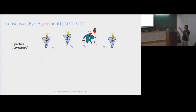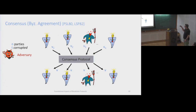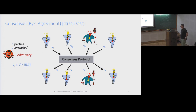What is consensus? You have a bunch of parties, some of them might be corrupted, with initial values. They are controlled by an adversary, and there's a consensus protocol whose output would be the same value to all parties. Without loss of generality, you can assume this is binary, because you can reduce a multivalued version of the problem to the binary version without much overhead.